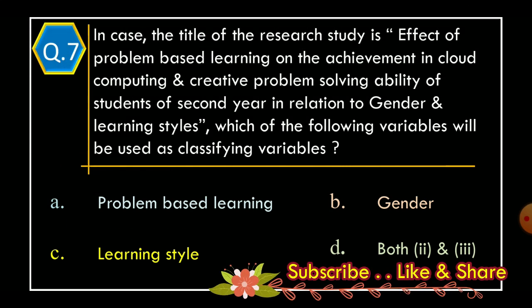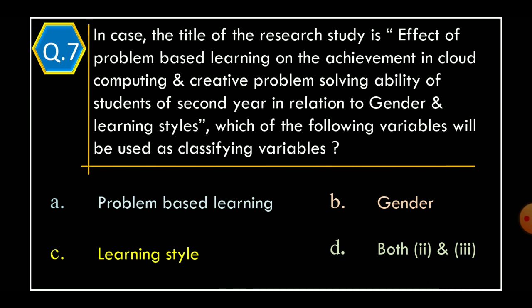Question 7: In case the title of the research study is 'Effect of Problem Based Learning on the Achievement in Cloud Computing and Creative Problem Solving Ability of Students of Second Year in relation to gender and learning styles,' which of the following variables will be used as classifying variables? Option A: problem based learning. Option B: gender. Option C: learning style. Option D: both Option B, gender, and Option C, learning style. The correct option is Option D, both gender and learning style.